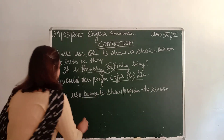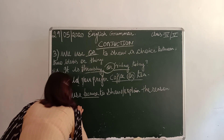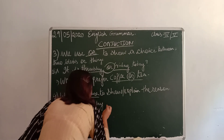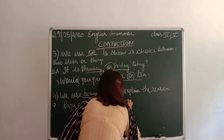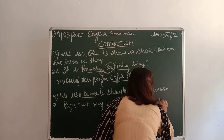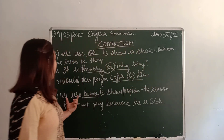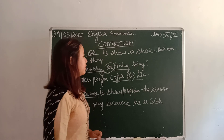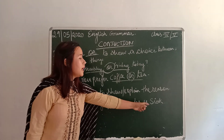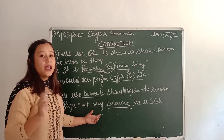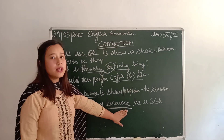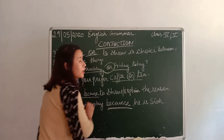The conjunction word 'because' — let's see its uses with examples. Raju can't play because he is sick. We use 'because' to show or explain the reason. So in the sentence 'Raju can't play because he is sick', Raju is sick — that's why he can't play. The conjunction word 'because' is used when we show the reason.